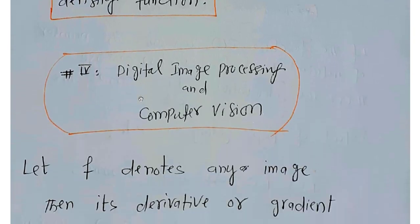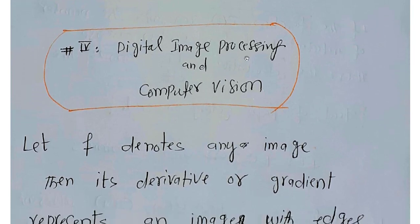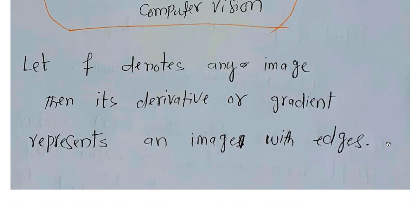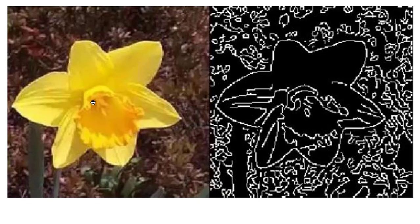Similarly, in digital image processing and computer vision, if f denotes any image, then its derivative or gradient represents an image with edges. So if f is an original image, its derivative is actually the image with edges highlighted. Students in digital image processing and computer vision know very well the importance of edges in images.